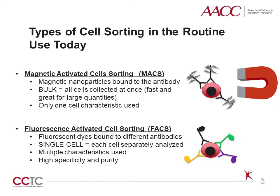Two commonly used techniques today are MACs and FACs. Magnetic Activated Cell Sorting, or MACs, uses magnetic nanoparticles bound to monoclonal antibodies. This technique is robust and fast, and is a great application for isolating large quantities of cells. However, it usually uses only a single cell characteristic, and the purity levels are usually about 90%. In contrast, fluorescent activated cell sorting, or FACs, utilizes multiple different cell characteristics by deploying staining with fluorescently labeled antibodies. This process analyzes and sorts every single cell separately, and therefore has high specificity and purity nearing 100%.